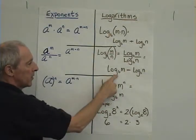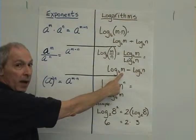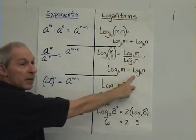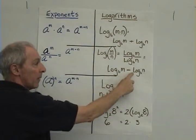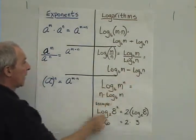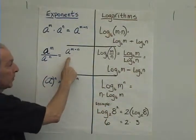Because remember, log base b of m signifies an exponent of some sort, and log base b of n also represents an exponent. We can subtract the two just as we can subtract them here.